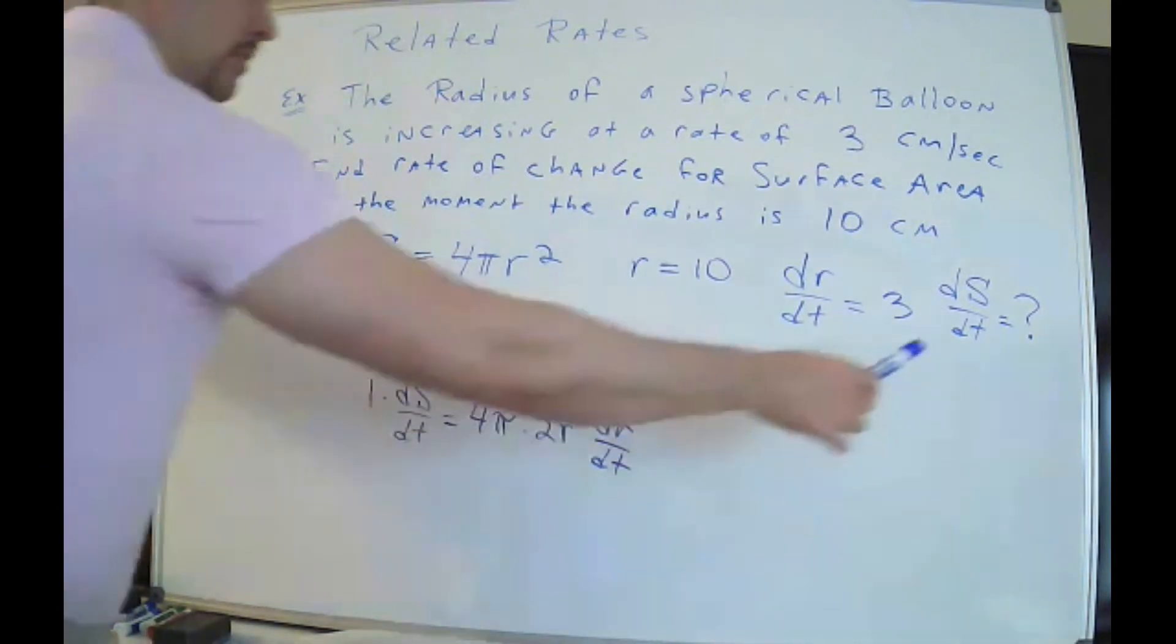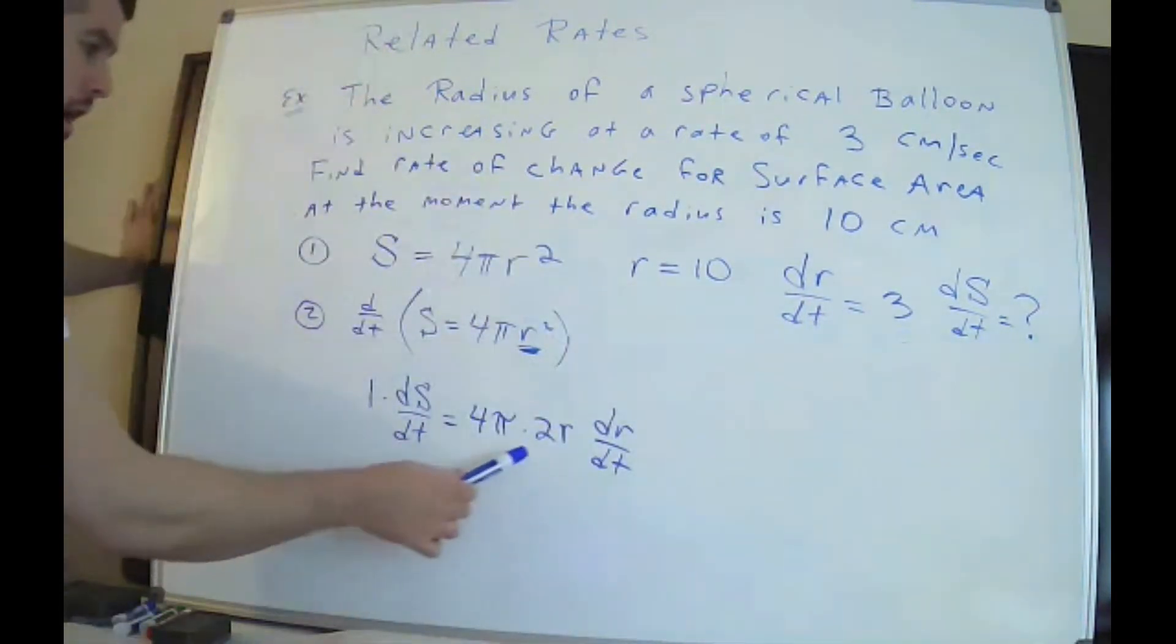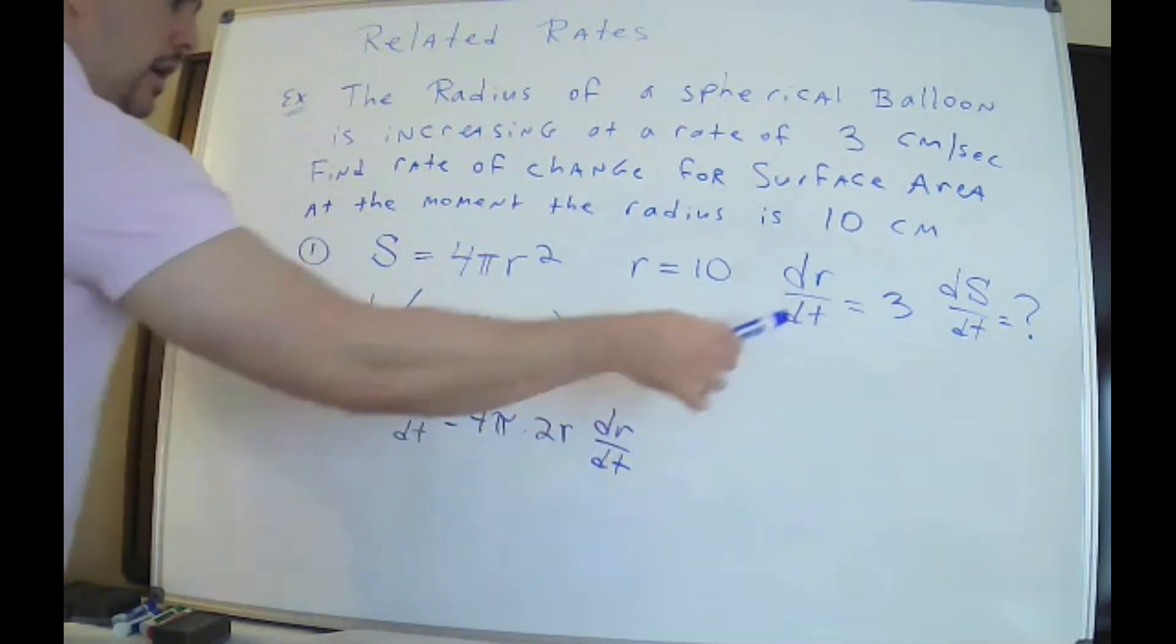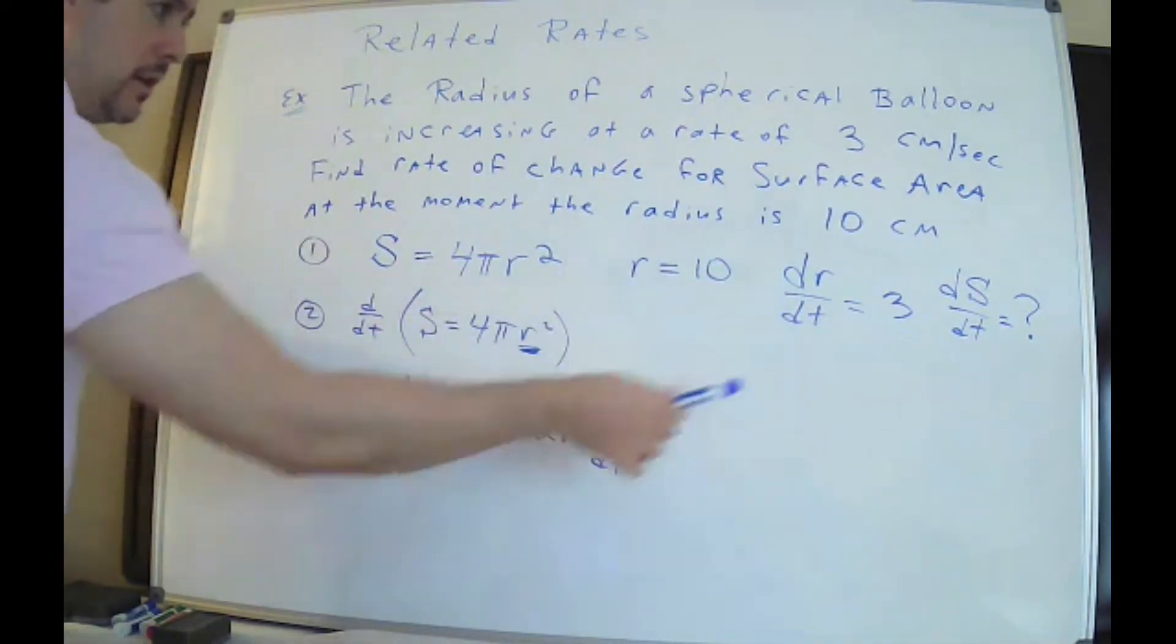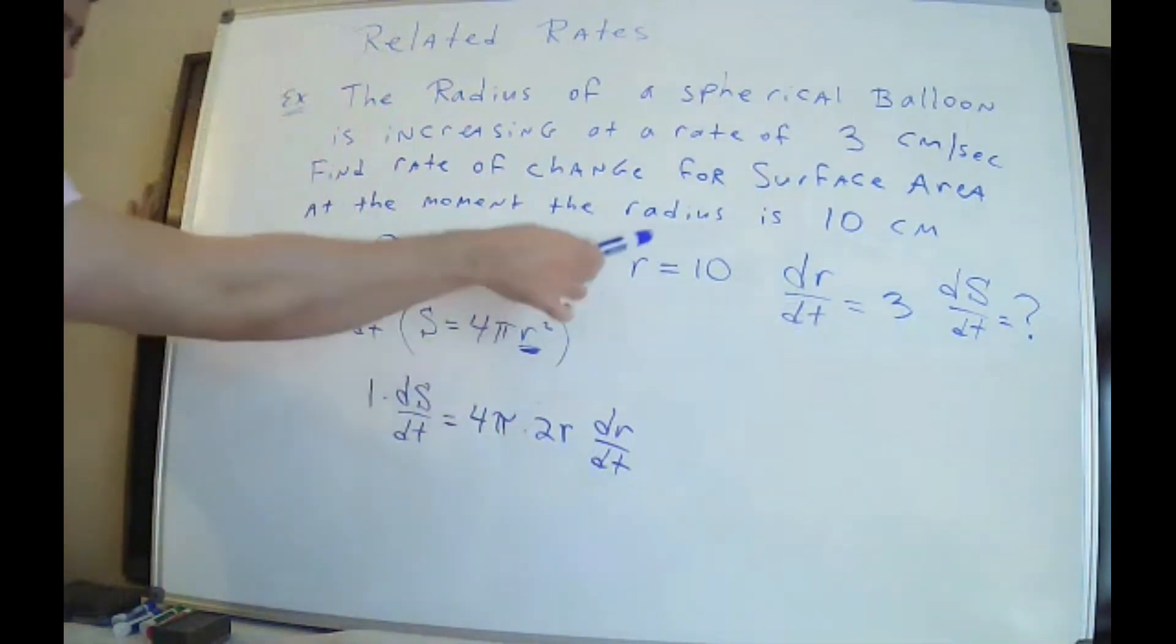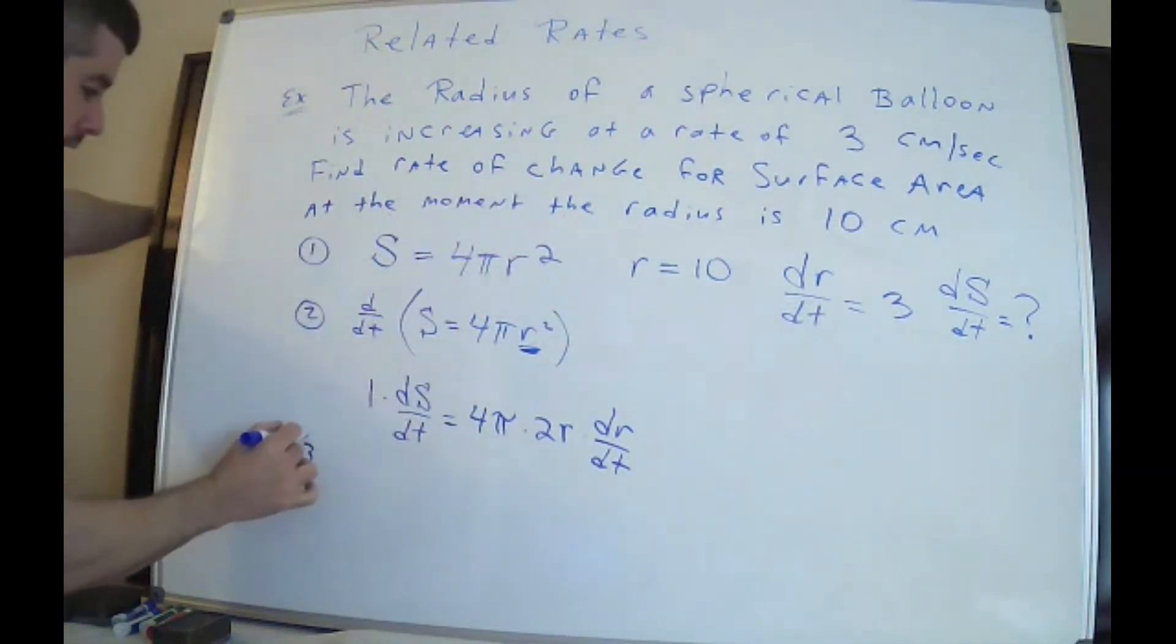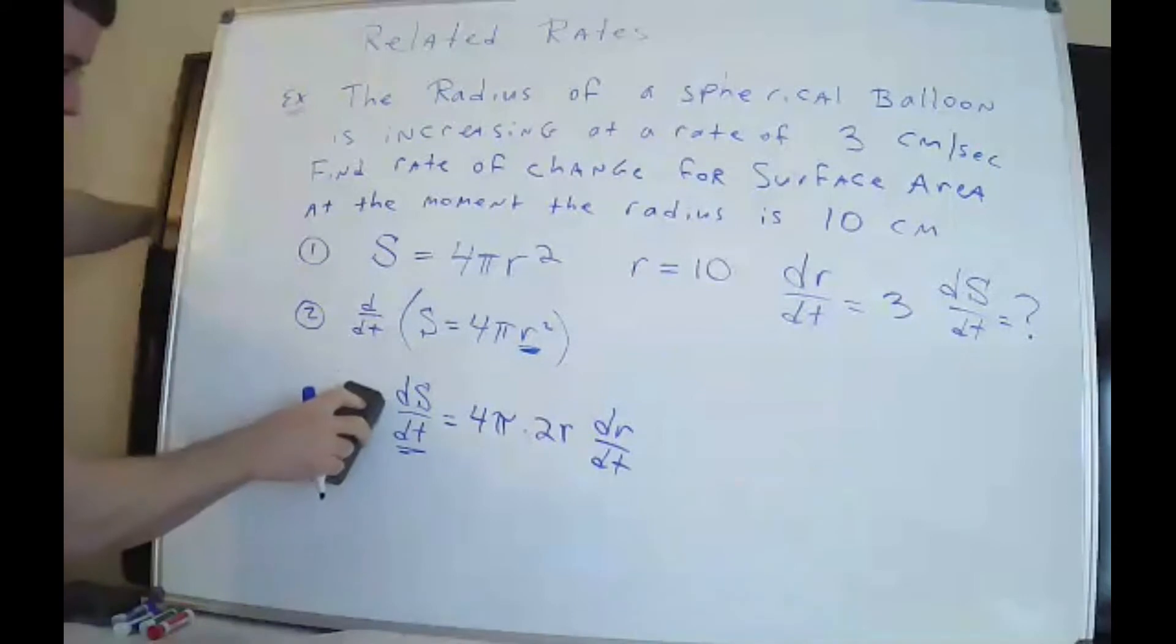Now, I have dS/dt. I don't know what it is. I have an r. I know it's supposed to be 10. I have dr/dt. I know it's supposed to be 3. I'm going to put everything I wrote in step one into this formula now. And then once I do that, I'm going to know what this is. You don't need that 1 there. We're not stupid. I can just cross out the 1.